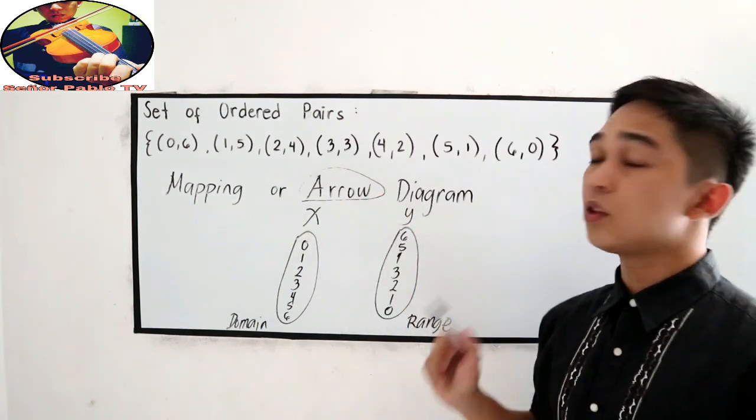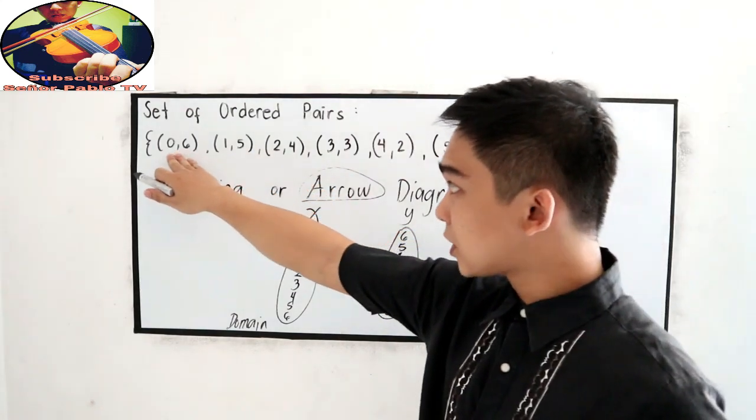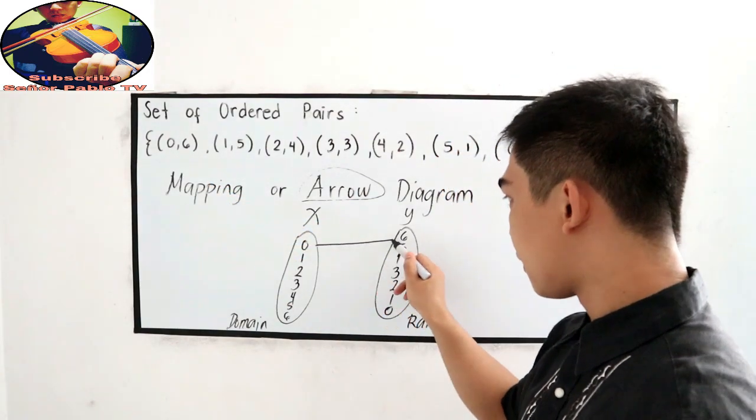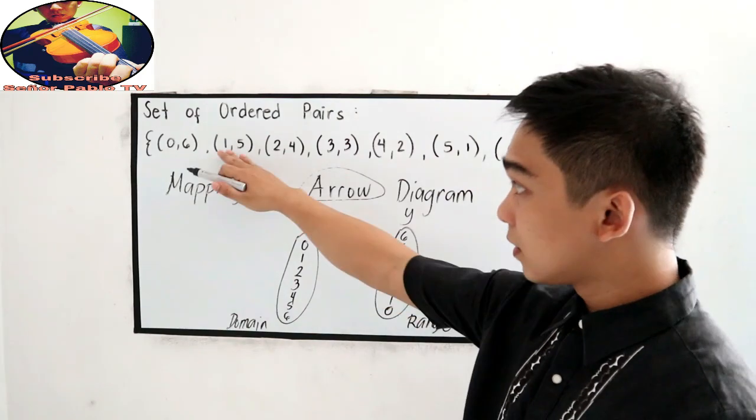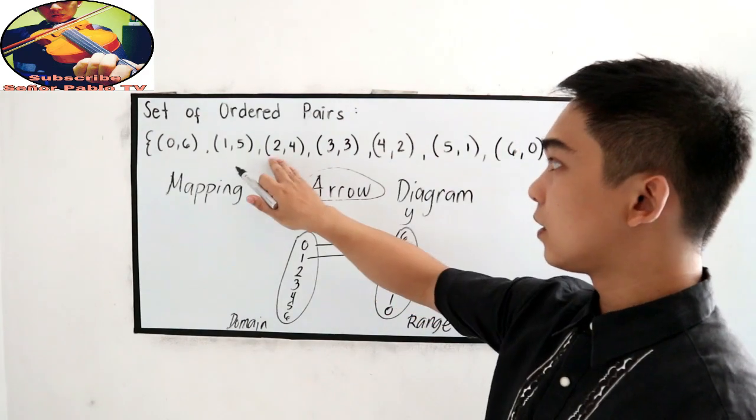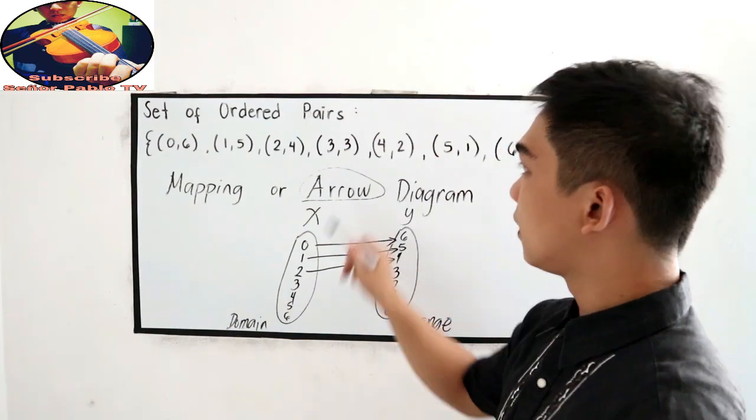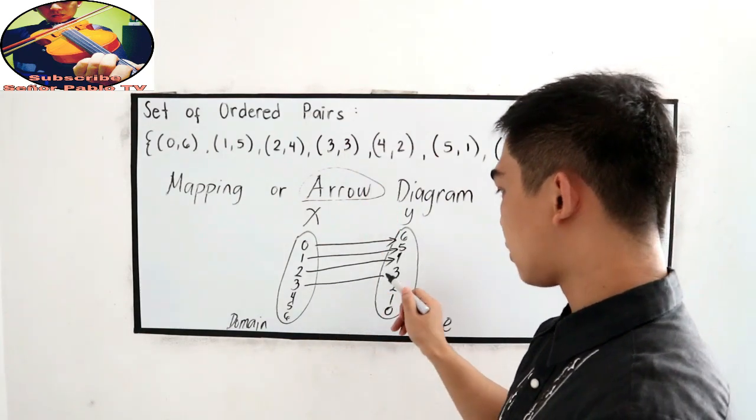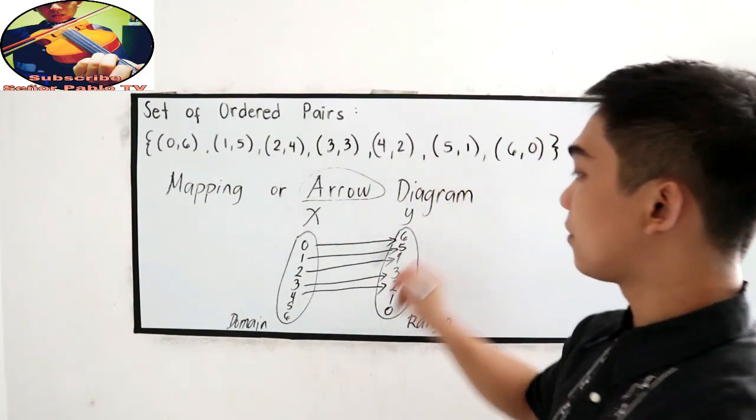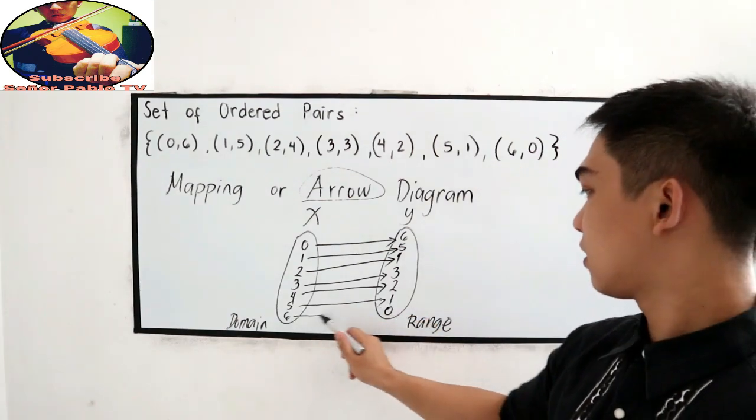We have arrows, so we need to draw an arrow using our ordered pairs. Our first pair is 0,6, so let us have 0 to 6. Second, 1,5, 1 moving to 5. Next, 2,4, so 2 going to 4. 3,3, 3 going to 3. 4,2, 4 going to 2, and 5 going to 1, and 6, 0.